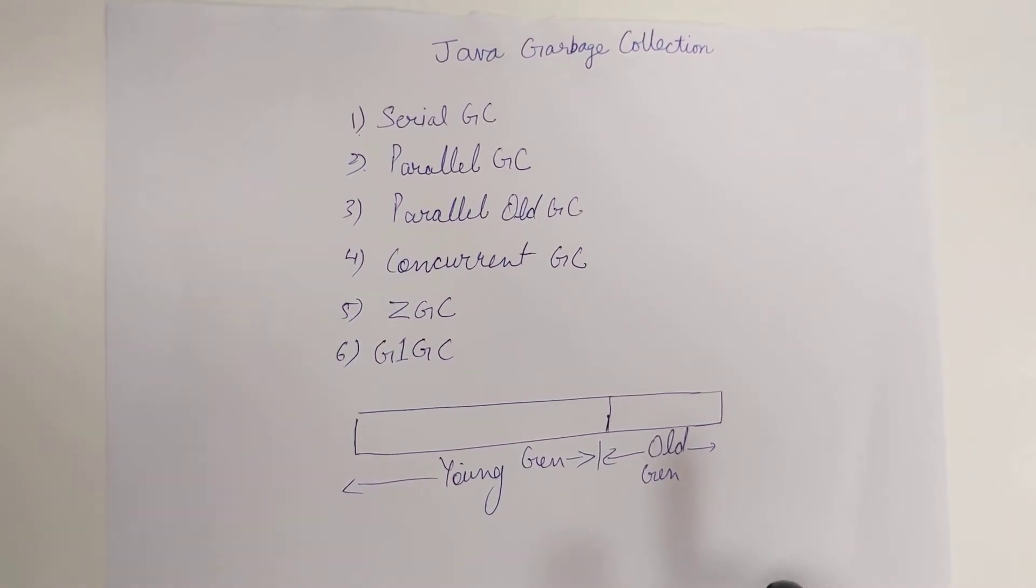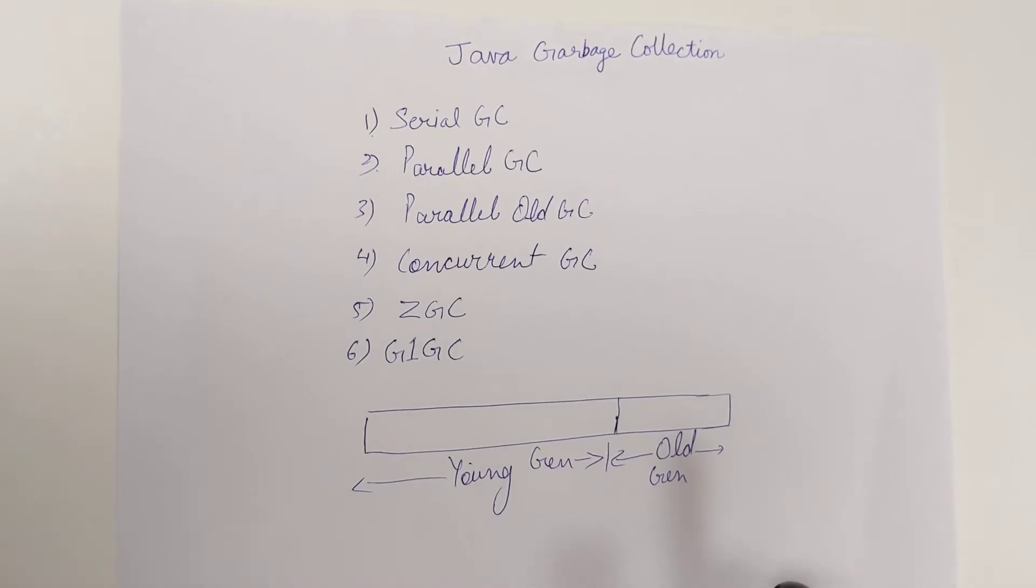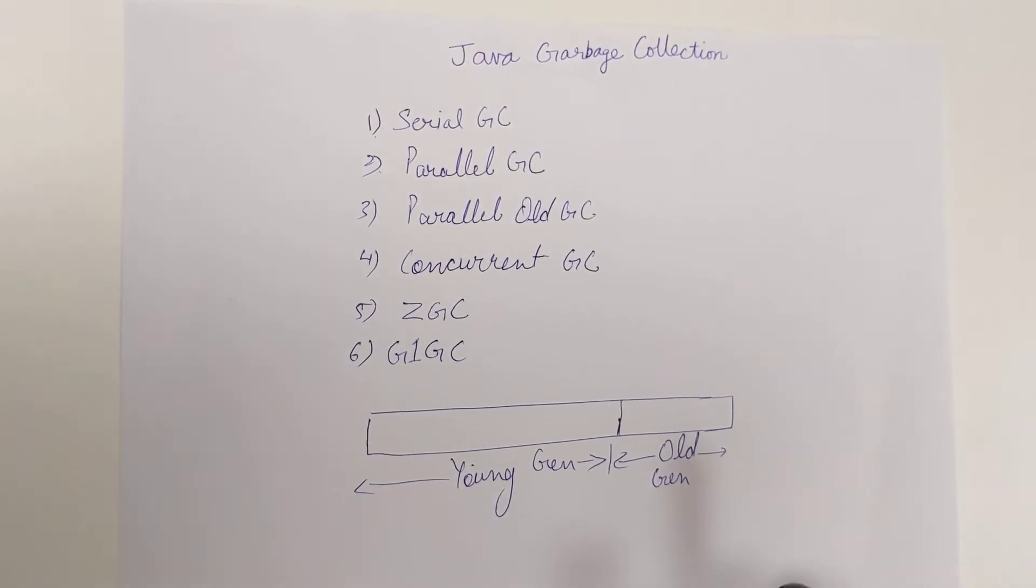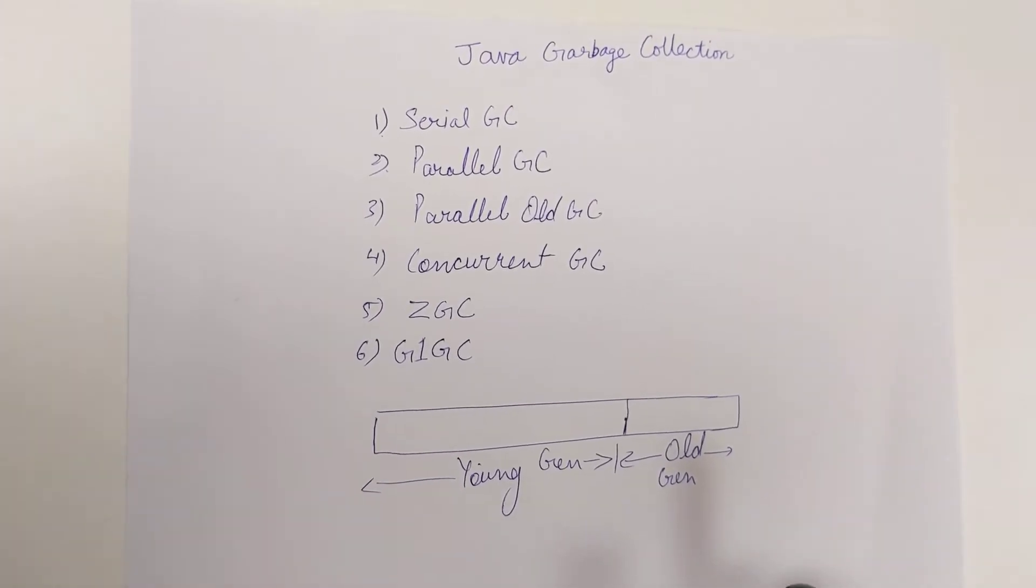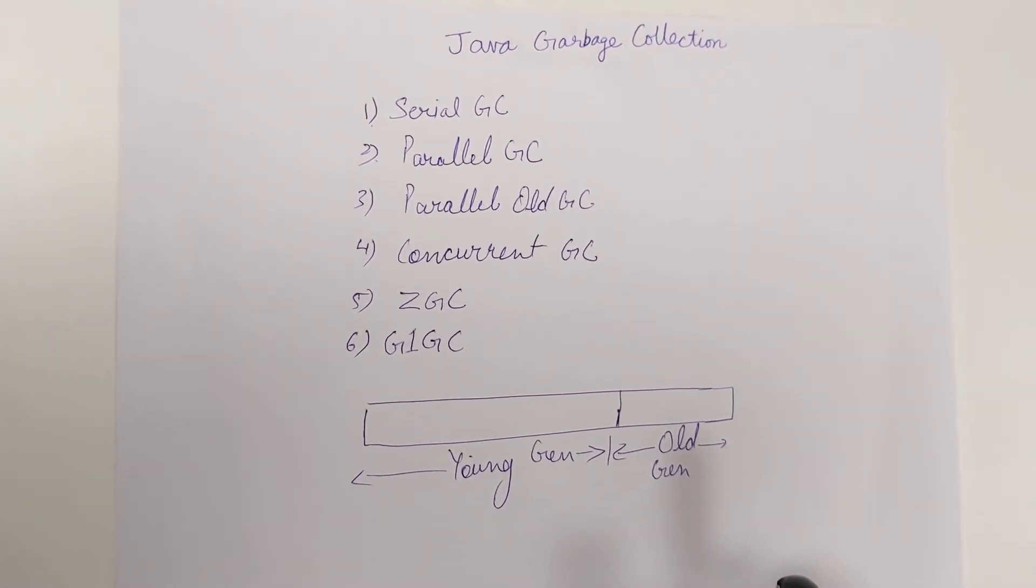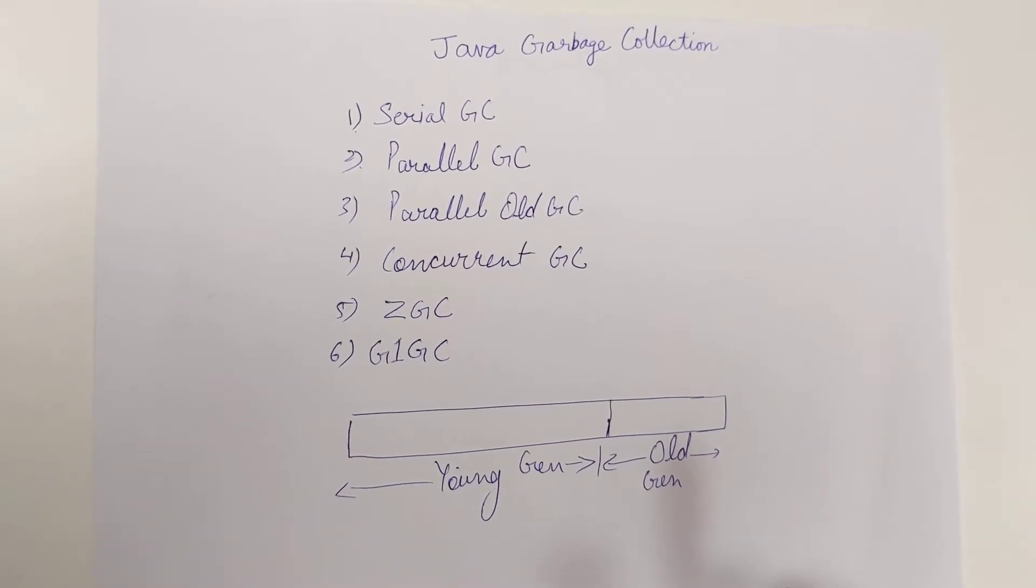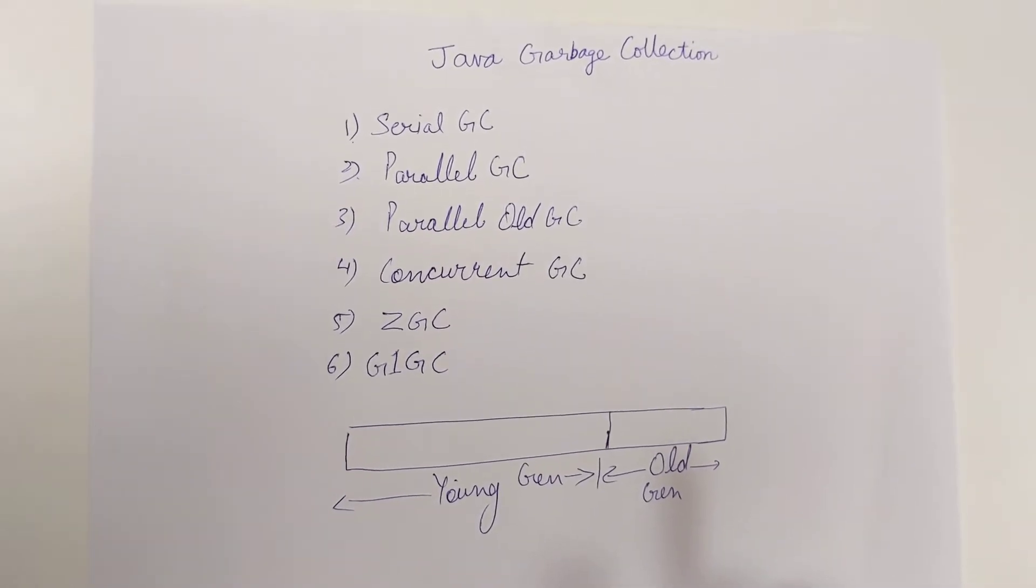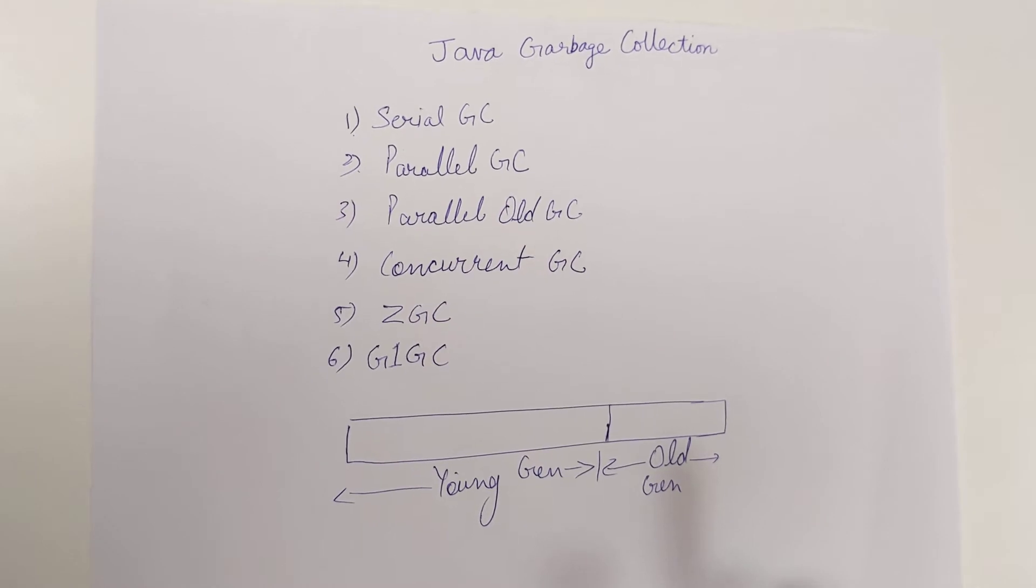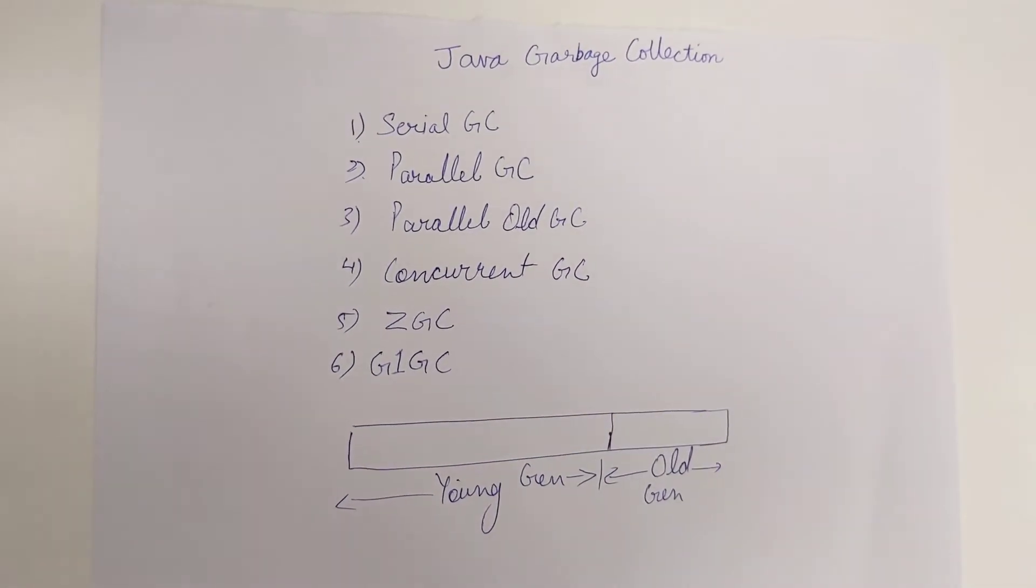Hello friends, today we are going to learn about the different types of garbage collection in Java. There are six types of garbage collection currently in OpenJDK. Some are deprecated and not in current use, some are newly introduced like ZGC. We'll learn one by one. The first one is Serial GC.